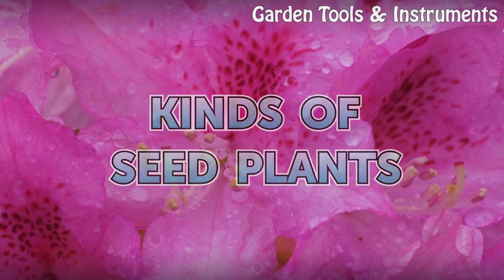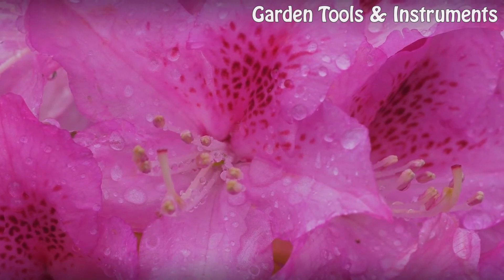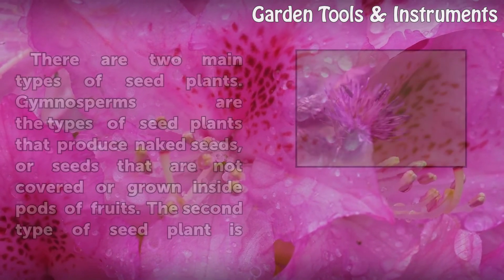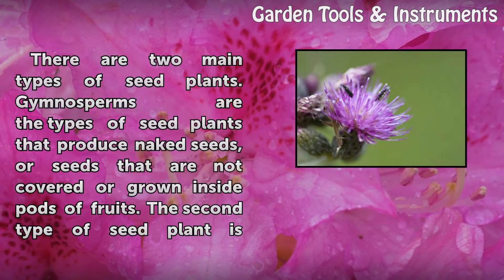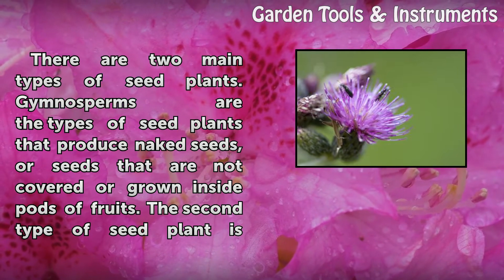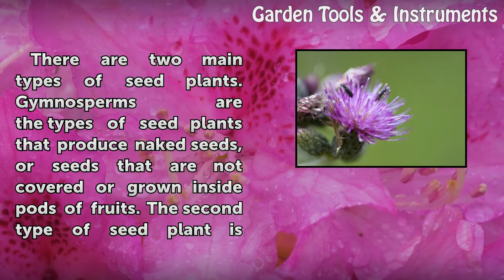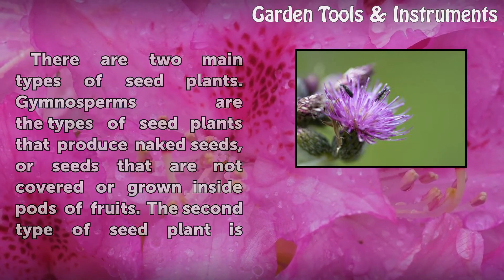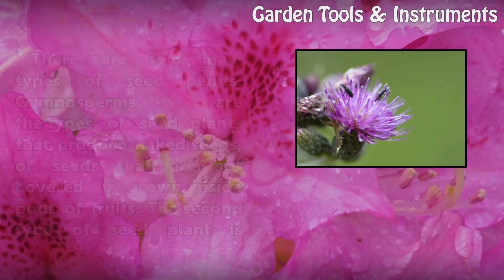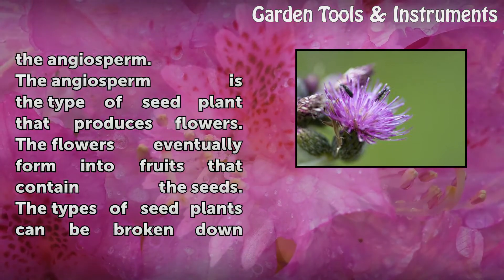Kinds of Seed Plants. There are two main types of seed plants. Gymnosperms are the types of seed plants that produce naked seeds, or seeds that are not covered or grown inside pods or fruits.